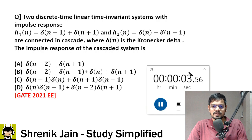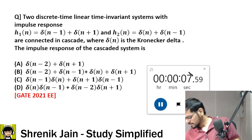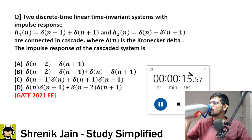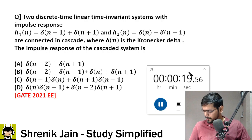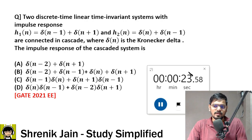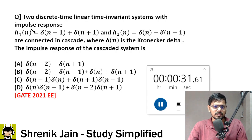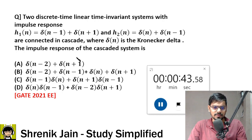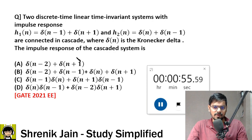This question is simple — one minute is enough. If two impulse responses are connected in cascade, they are connected in series. What is the resultant impulse response? Eight, seven, six, five, four, three, two, one — the right answer is B.